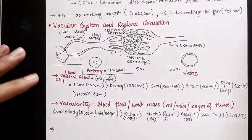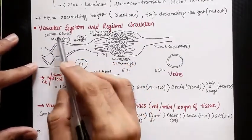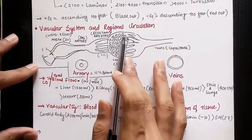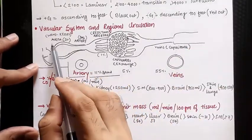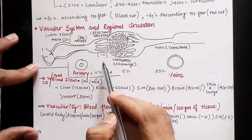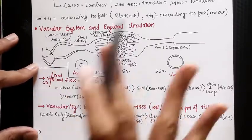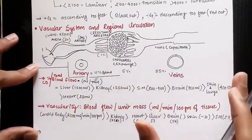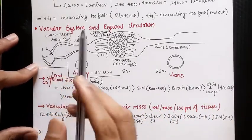Now we will discuss the vascular system and regional circulation of the blood. This is the diagrammatic representation of vessels and the heart. The left side of the heart leads to the aorta, then arteries, arterioles, capillaries, venules, and veins, and finally the vena cava. The aorta contains 2% of total blood, arteries 8%, arterioles 1% — totaling 11% in the arterial side. Capillaries contain 5% and veins contain 55% of blood.